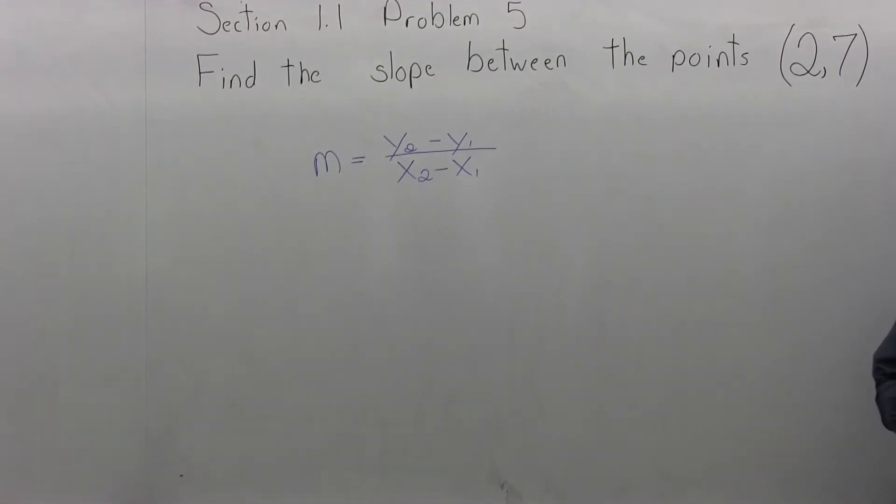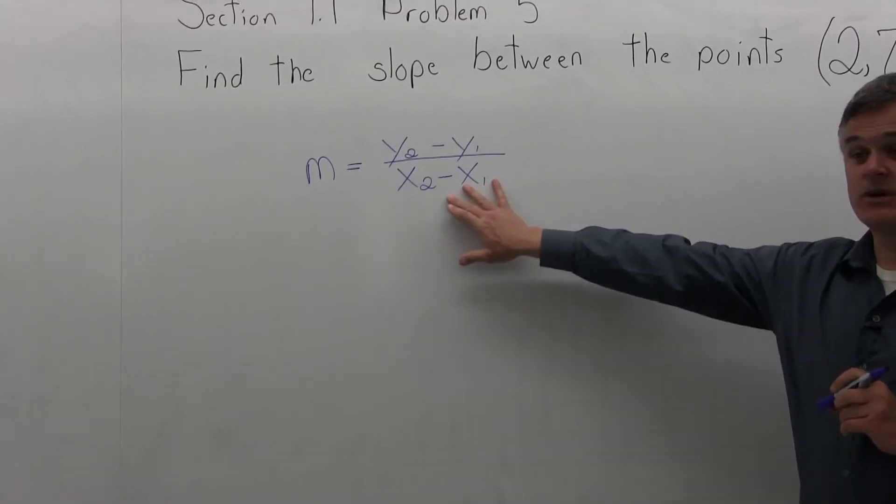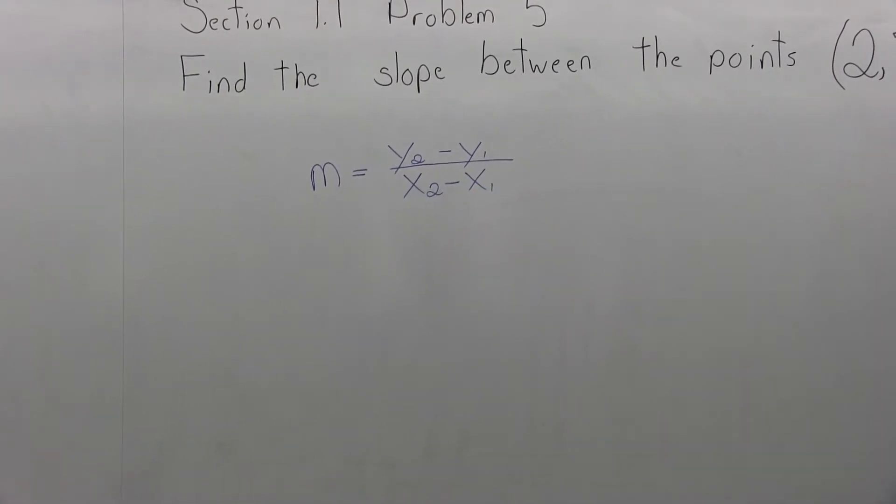Now the formula seems a little complicated because of the little subscripts, but if you label the given points, it seems much simpler.